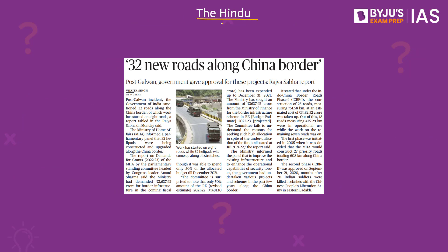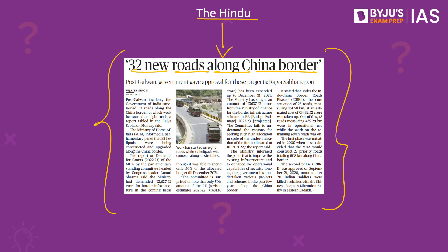This question was taken up because according to an article in The Hindu, 32 new border roads have been built by India along the Chinese border. The Ministry of Home Affairs has informed a parliamentary panel that 32 strategic border roads along with helipads have been constructed and upgraded along the Chinese border, as part of India's improving preparedness following the 2020 Galwan clashes between India and China in the Ladakh sector. The Home Ministry has been seeking additional funds from the Finance Ministry to further scale up India's border infrastructure, particularly strategic border roads along the Chinese border, which has been accelerated since 2005 under the Indo-China Border Roads Phase 1. The second phase was launched after the Galwan clashes of 2020.